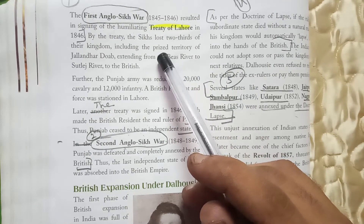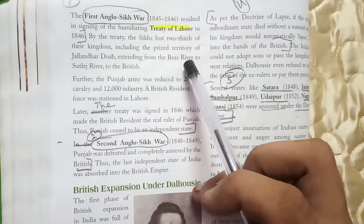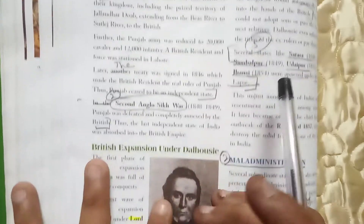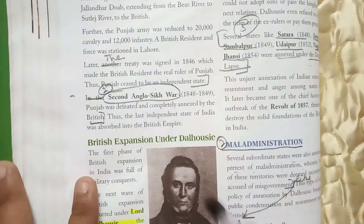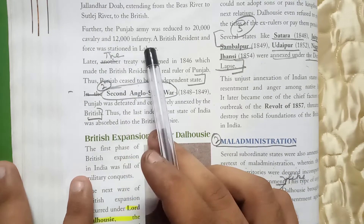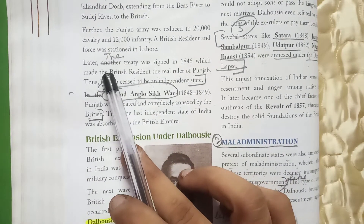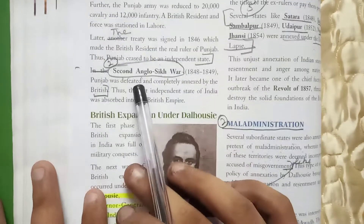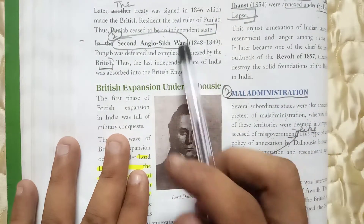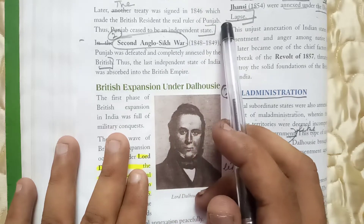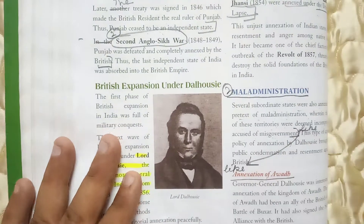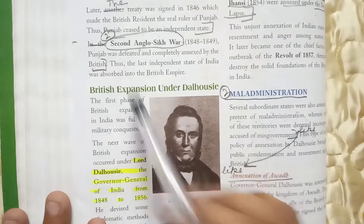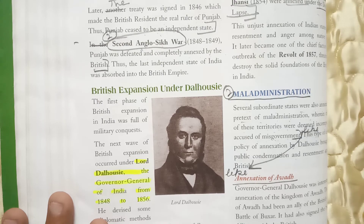Under the Treaty of Lahore, the Sikhs lost two-thirds of their kingdom, including the Jalandhar Doab extending from the Beas River to the Sutlej River, which went to the British. Further, the Punjab army was reduced to twenty thousand infantry and twelve thousand cavalry. A British resident and force was stationed in Lahore. Later, another treaty was signed in 1846, which made the British resident the real ruler of Punjab, thus Punjab ceased to be an independent state. In the Second Anglo-Sikh War of 1848–49, Punjab was defeated and completely annexed by the British.